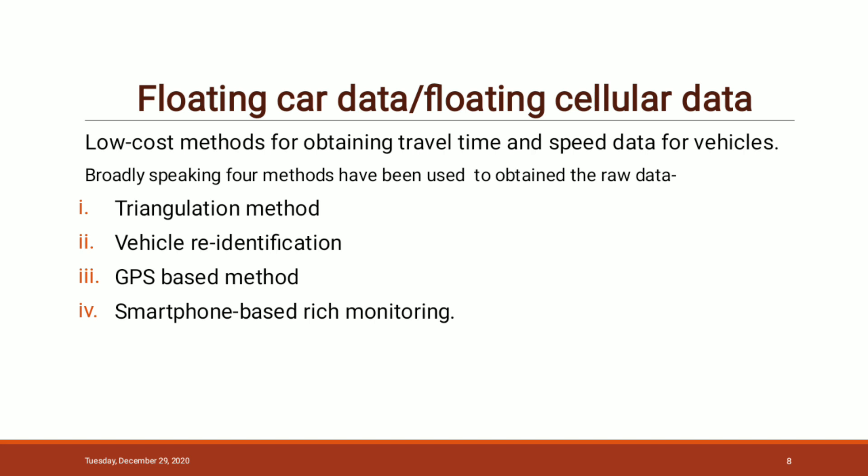The next one is floating car data and floating cellular data. In traffic engineering and management, floating car data typically records the time or date of the moving vehicle and speed data directly collected by the moving vehicle itself at a fixed location by stationary devices and observers. The participating vehicle acts as a moving sensor using an onboard GPS receiver or cellular phones. The advantage of this method is that no additional hardware on the road network is necessary. The four methods used to obtain raw data are: triangulation method, vehicle re-identification method, GPS-based method, and smartphone-based rich monitoring method.